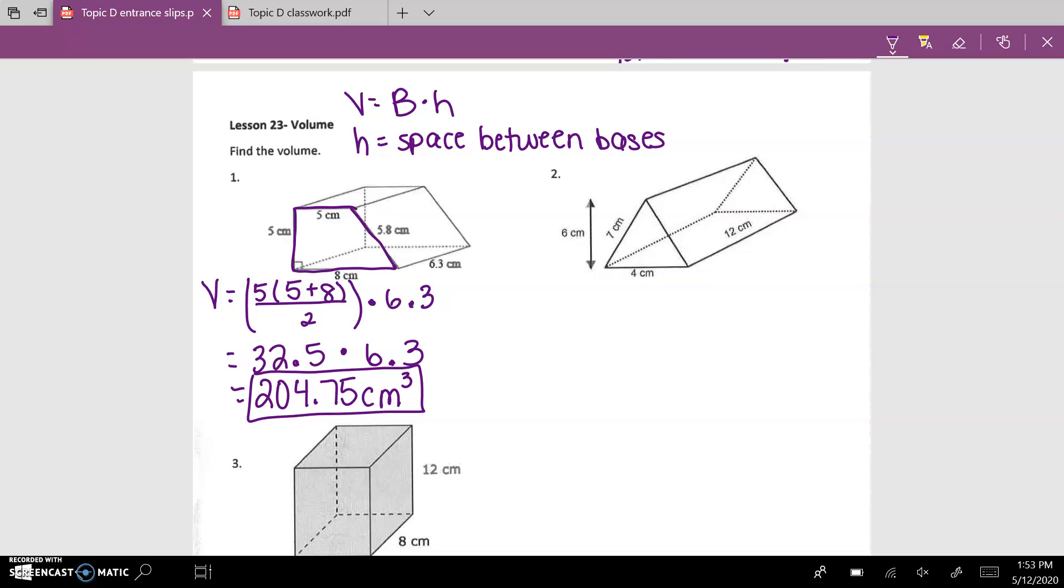The next one is a triangular prism, so the base would be a triangle. The area of the base is the base, which is 4, times height, which is 6, divided by 2, times the height of the entire shape, which is 12.